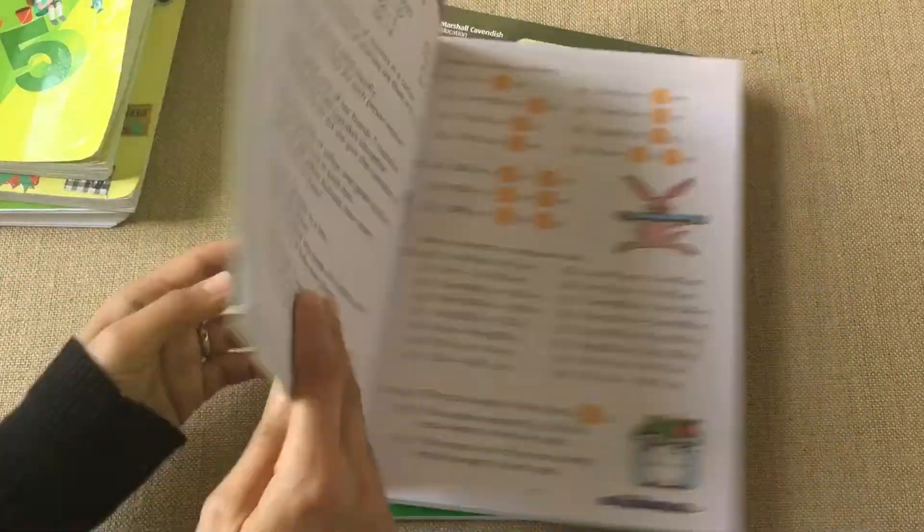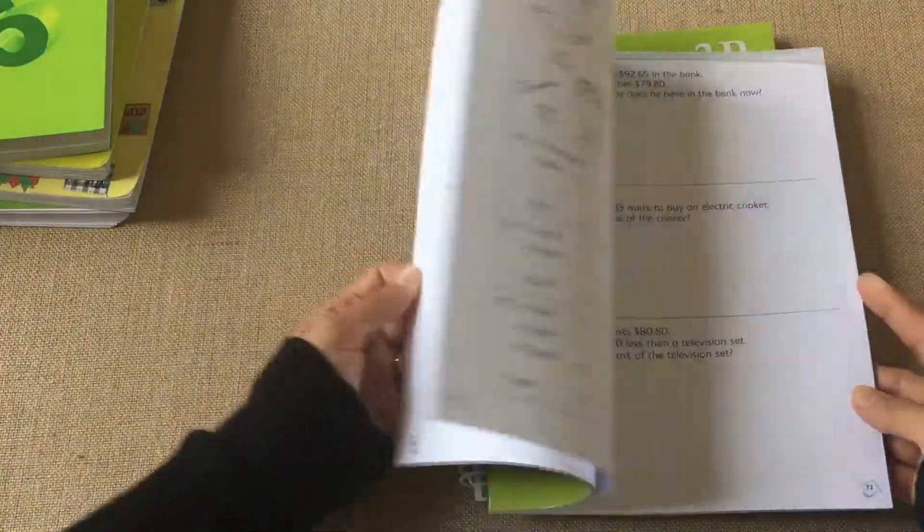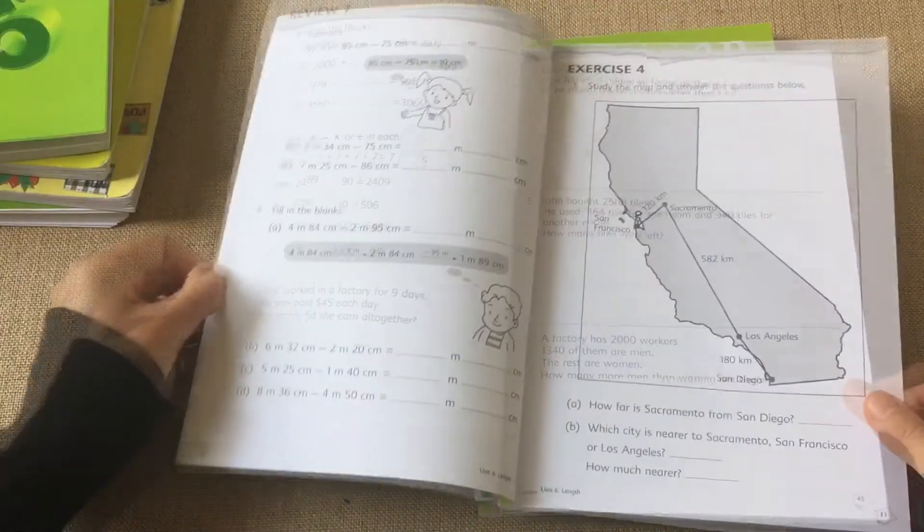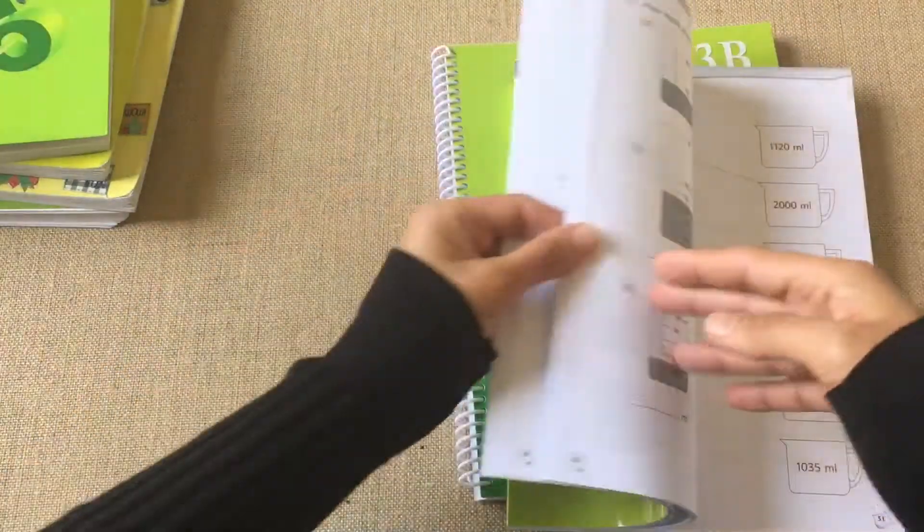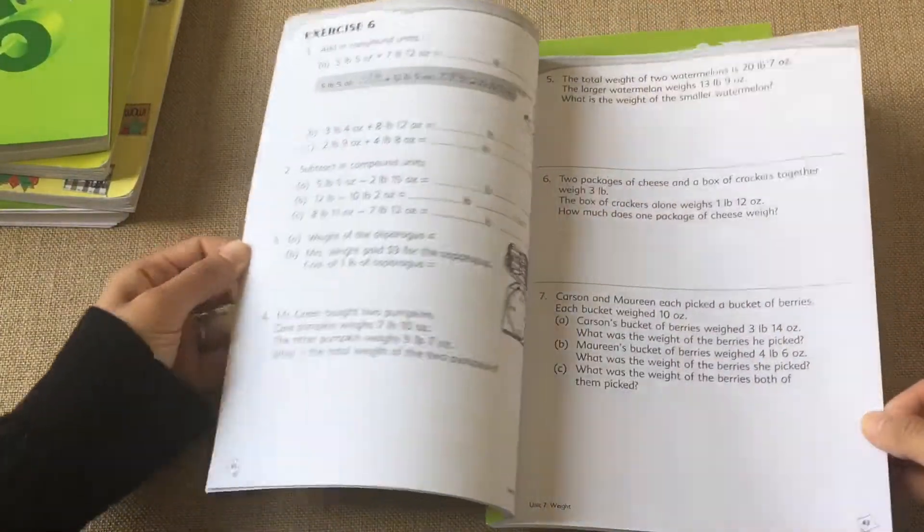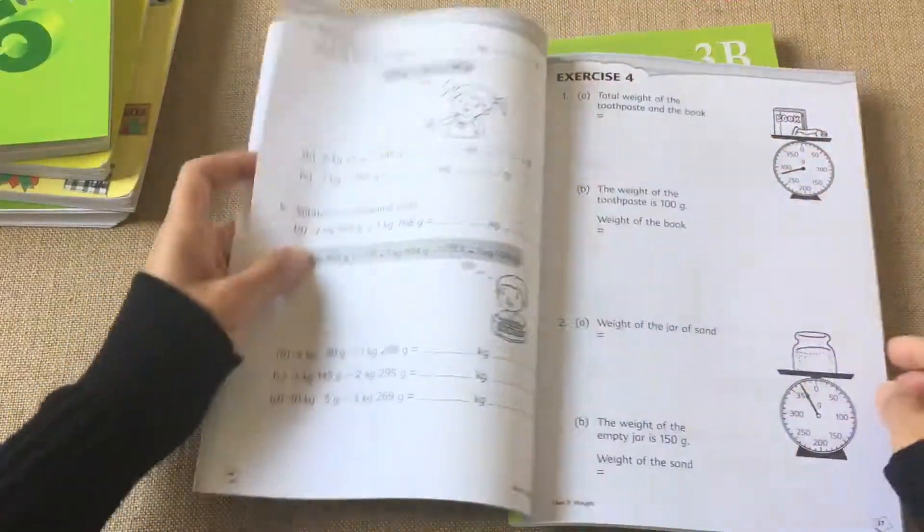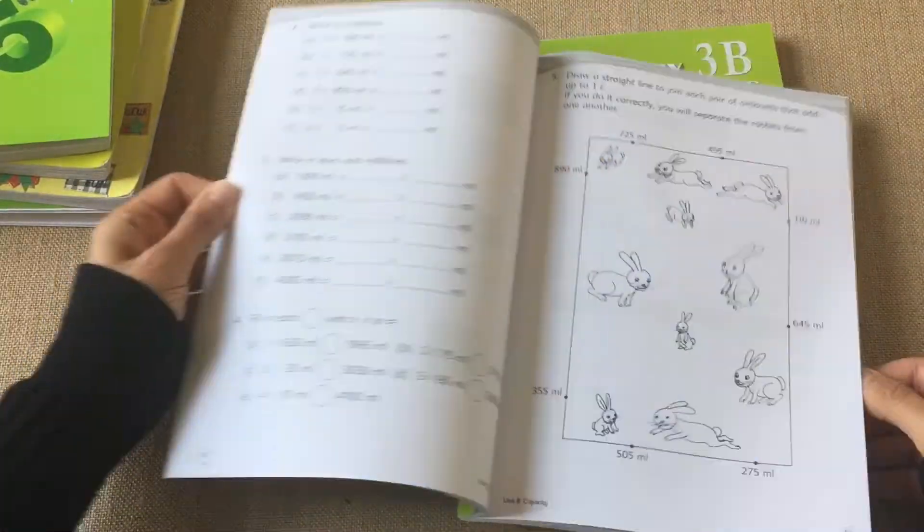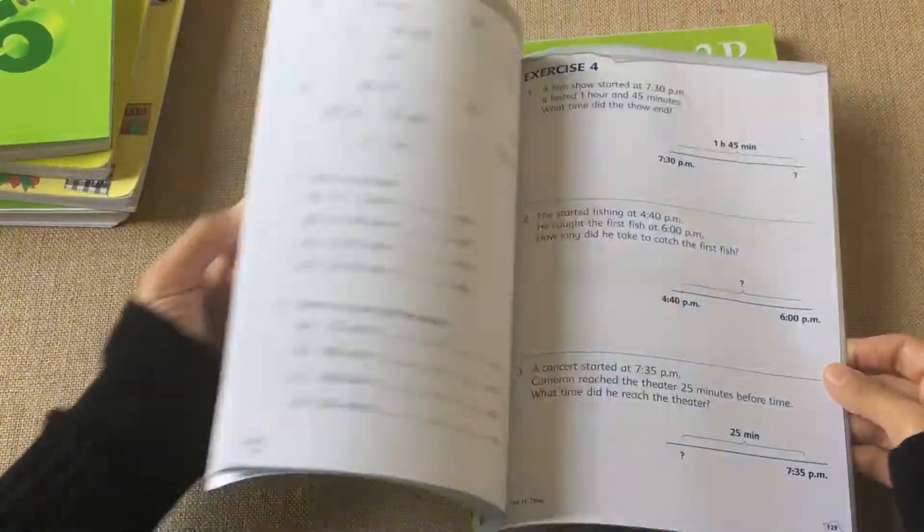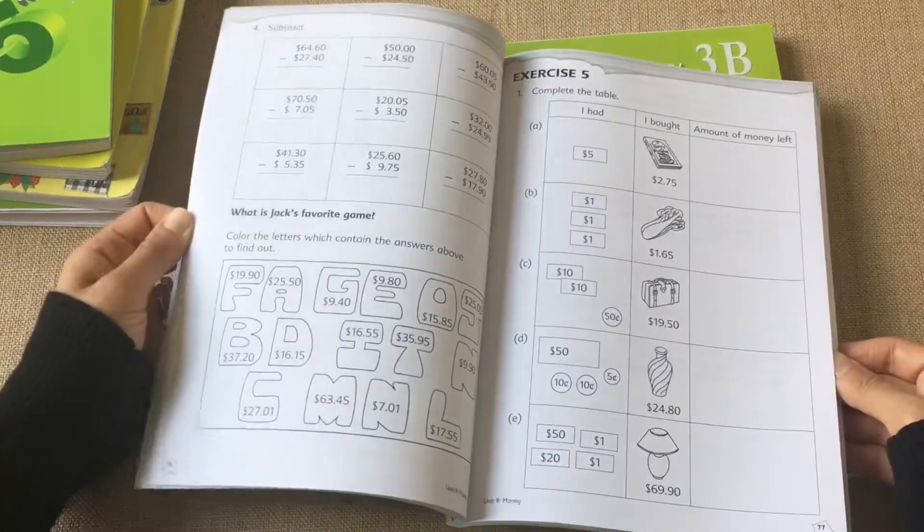That's the textbook. The workbook looks plain, black and white. It's really nicely laid out with space provided for writing your answers. It has word problems, regular problems, and everything that you can ask for in a math curriculum. There's nothing lacking in this.